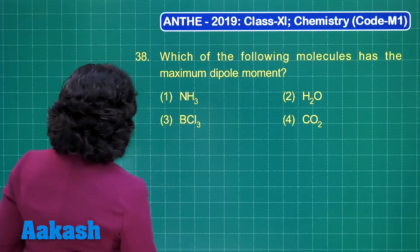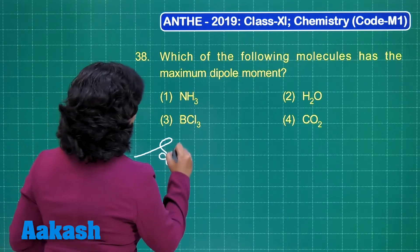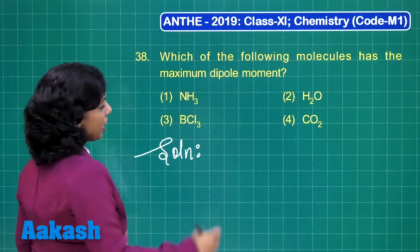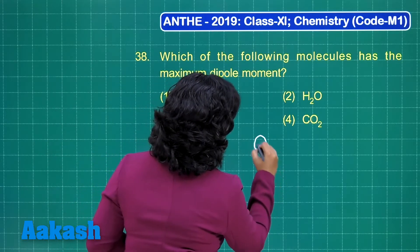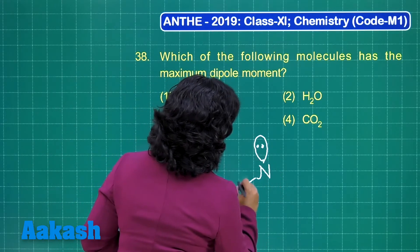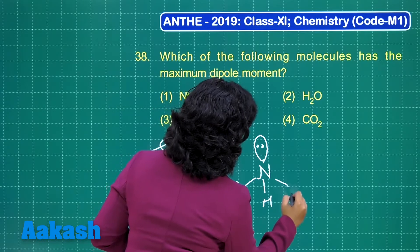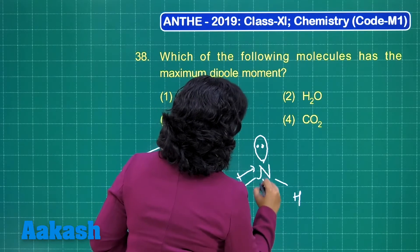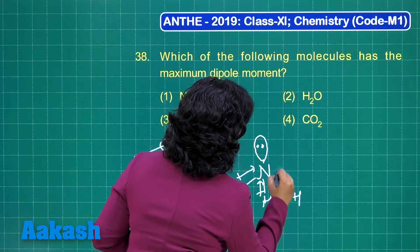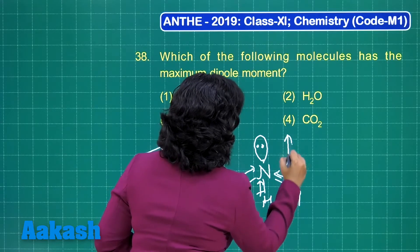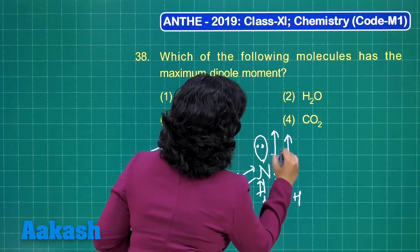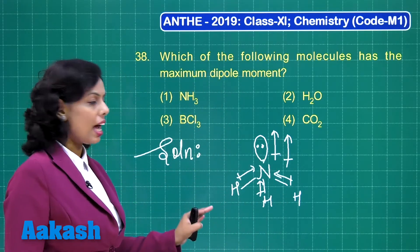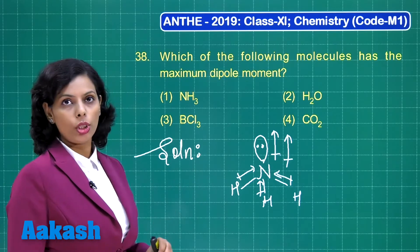Let us first check the species given here. We have the ammonia molecule, and in case of ammonia molecule it has the pyramidal shape. The bond dipoles would be in this way and there would be the dipole due to the presence of the lone pair also. So in this case we have polarity in this molecule.